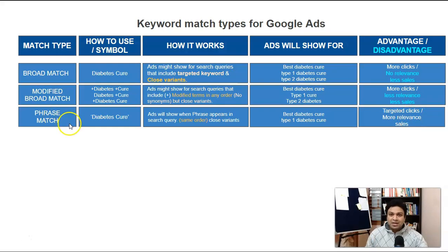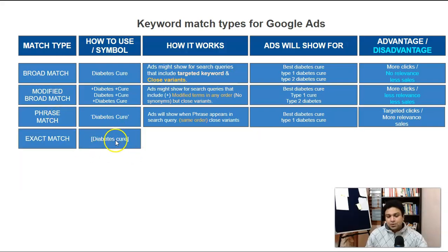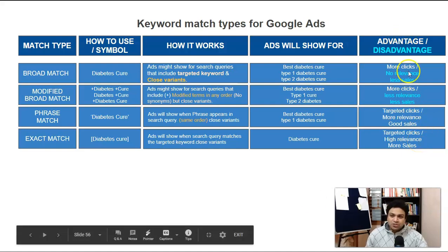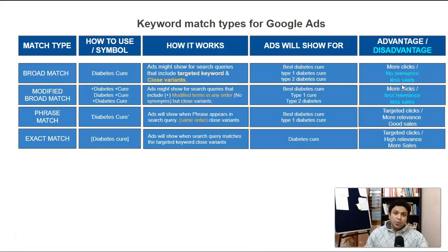You should not use broad match at all — you're going to lose a lot of money. You can use modified broad match, phrase match, and exact match. With exact match, you put brackets around the terms. If somebody types exactly those two terms, your ad will trigger — bringing more targeted clicks, high relevancy, a high quality score, and more sales. The best approach is combining modified broad match, phrase match, and exact match together for more accurate results.